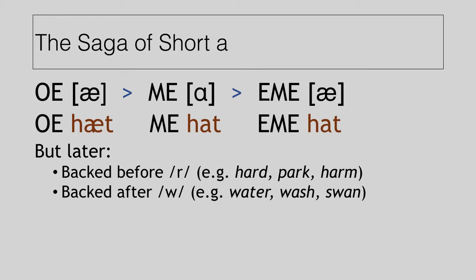Also, the vowel short A was backed when it appeared after a W sound. So watter and wash and swan, as they would be pronounced in the first part of Early Modern English, eventually come to be water and wash and swan with a back vowel.